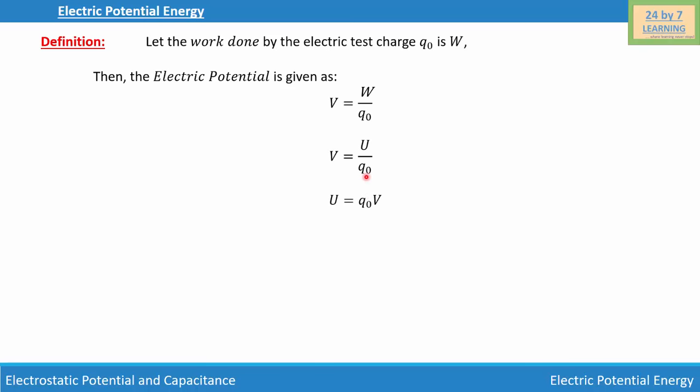Let's simplify further. If we cross multiply, we write U = Q₀ times V. We know that electric potential V = (1/4πε₀)(Q/R).